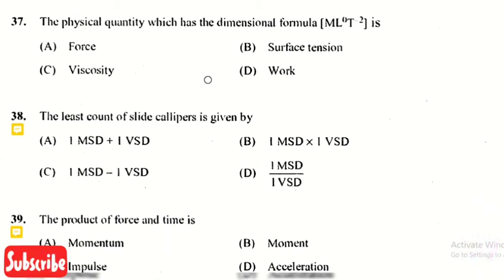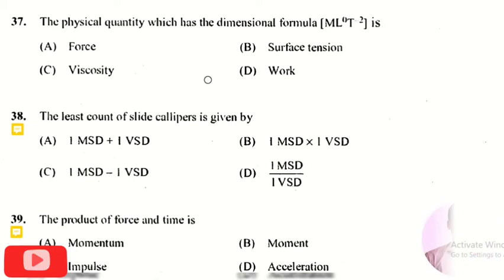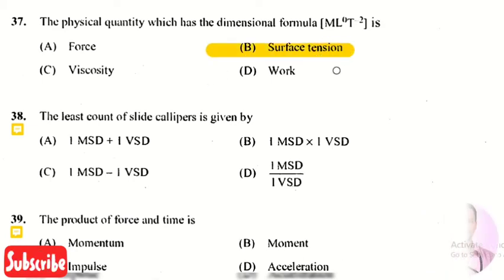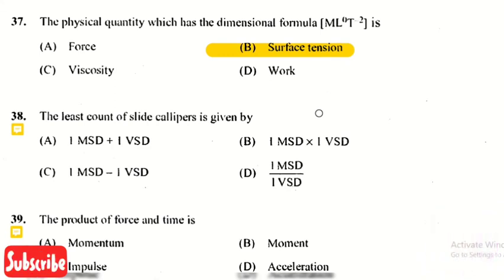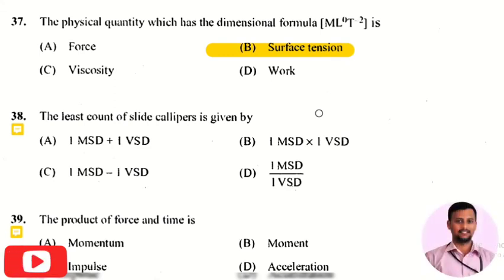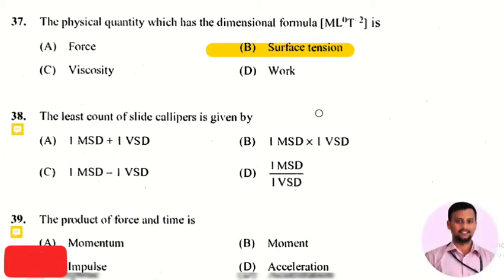The next question is: the physical quantity which has the dimensional formula M L raised to 0 T raised to minus 2 is? The right answer is option 2, that is surface tension. We have 7 basic physical quantities from which we obtain dimensional formulas — M is mass, L is length, and T is time.